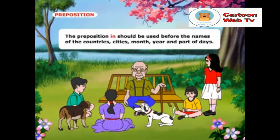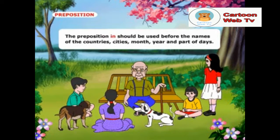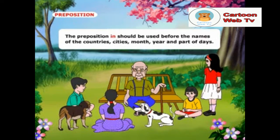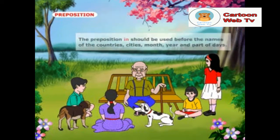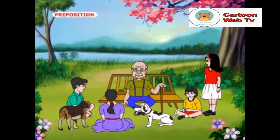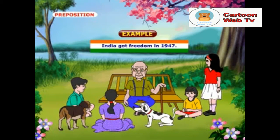The preposition in should be used before the names of countries, cities, months, years and parts of days. Example: India got freedom in 1947.